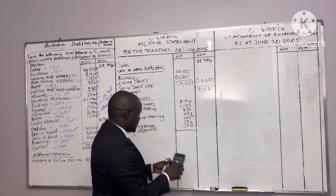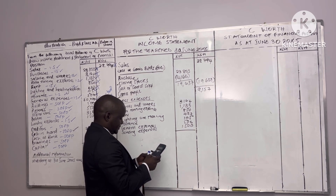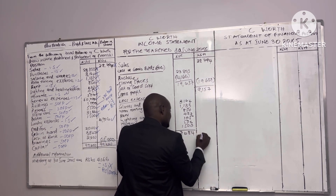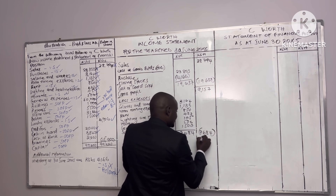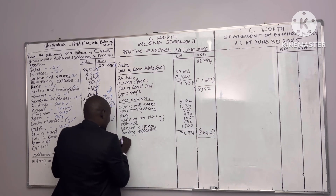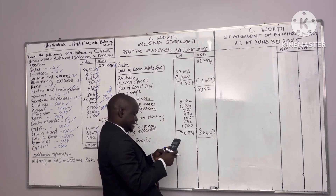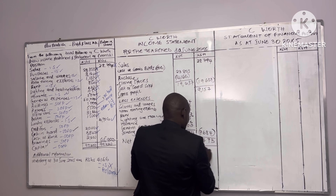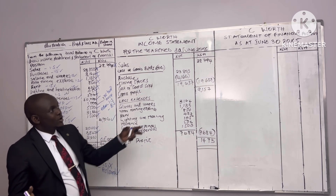We don't have any other expenses, so we get the total of these expenses and carry the figure over. The total is 7,684. So gross profit 9,157 minus total expenses 7,684 gives a net profit of 1,473. Once you get the net profit you go to the statement of financial position.